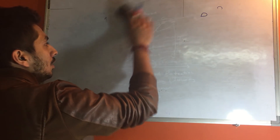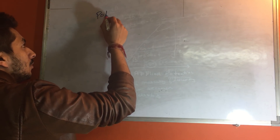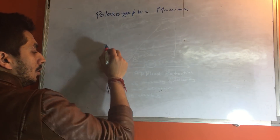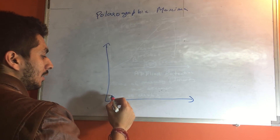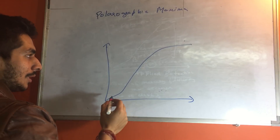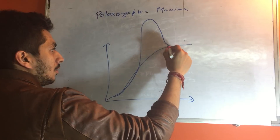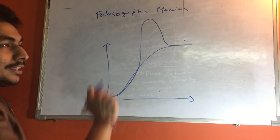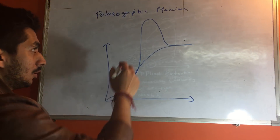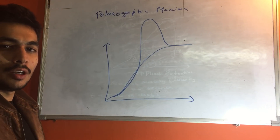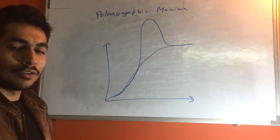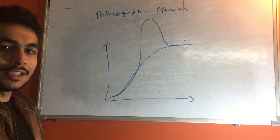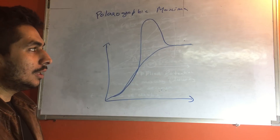Now, there is a concept called polarographic maxima. Generally the polarogram looks like an S-shaped curve, but sometimes instead of this S-shaped curve you see a peak. This is called polarographic maxima — it is a problem that arises in polarography. One might think this peak is because of the presence of a second kind of analyte in the solution, but it is not. It can be misinterpreted as a second analyte, but that is actually a problem with the polarographic maxima.